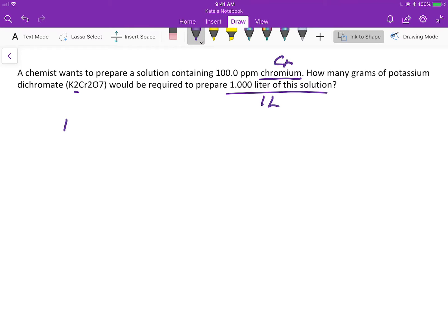We know that for every molecule of potassium dichromate, there are two chromate ions. It's a 1 to 2 ratio. And we know that 100 parts per million means 100 grams of solute, in this case chromium, over a million grams of solution.